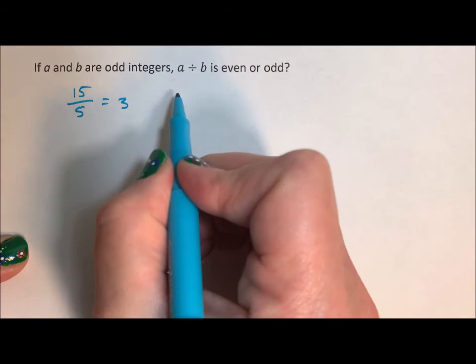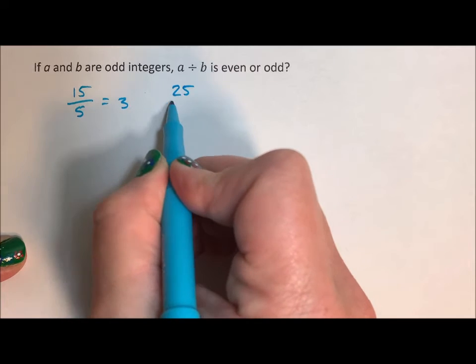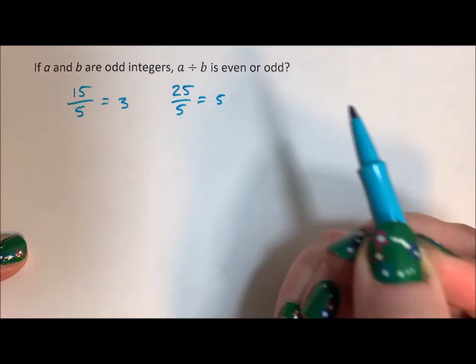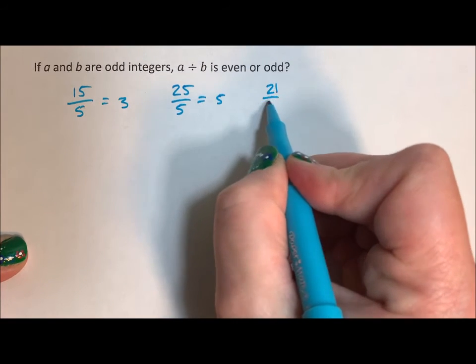Okay, well that's just one example. What about 25 divided by 5? What about 21 divided by 7?